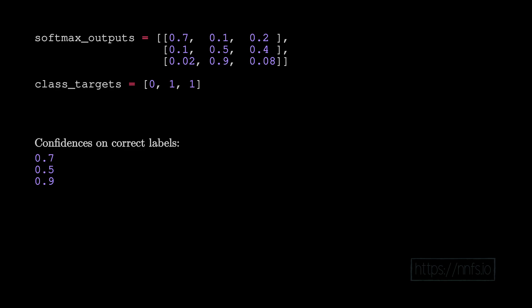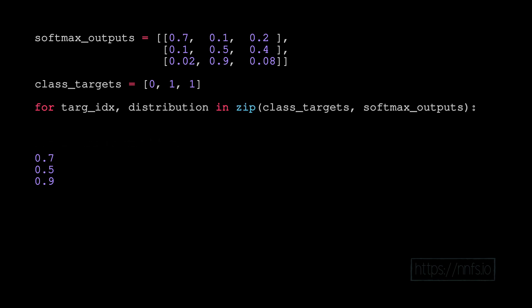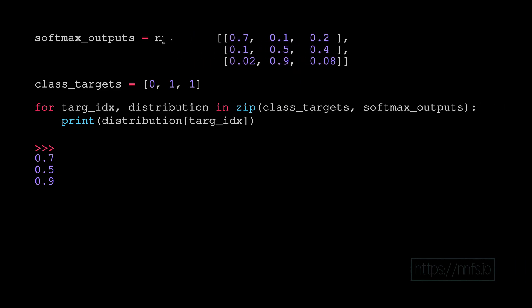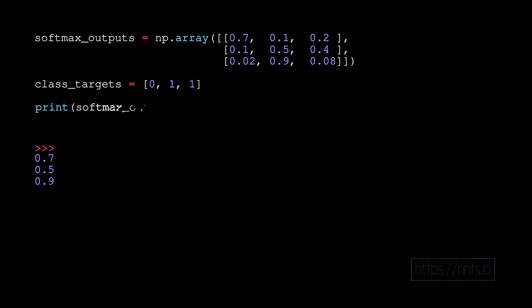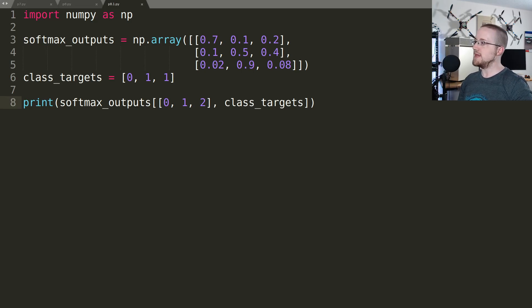Now that we know how these targets line up to the confidence values, how might we program this in pure Python? One way might be to zip these two lists together, then iterate the target index and the softmax distribution, where the desired confidence value is at the index of the target index in that softmax distribution. That said, we're going to incorporate NumPy now which is faster and more concise. We can get rid of the zipping and iteration and do all of this in one line, since the softmax outputs is now a NumPy array. The output will be a vector.